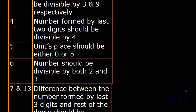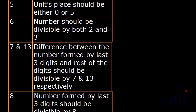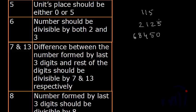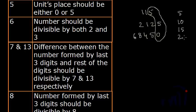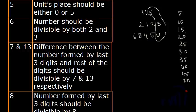Then we have the divisibility rule of 5, which is very simple. It says that the unit place should be either 0 or 5. So numbers like 115, 2125, or 58,450 will all be divisible by 5. The logic for this rule comes from the table of 5 — 5, 10, 15, 20, 25, 30, 35, 40, 45, 50 — if you see all these numbers carefully, in the unit place we have either 5 or 0. So this was the divisibility rule of 5.